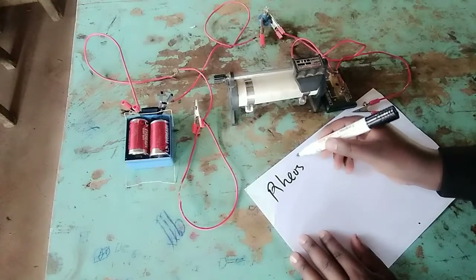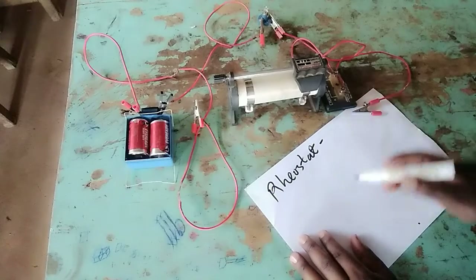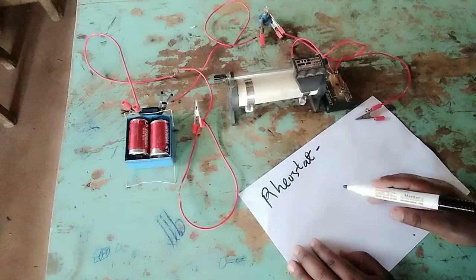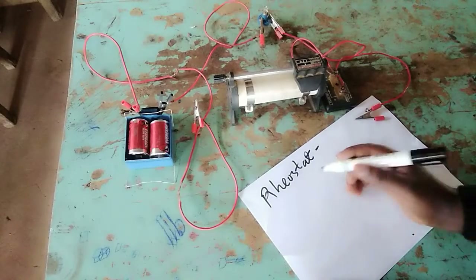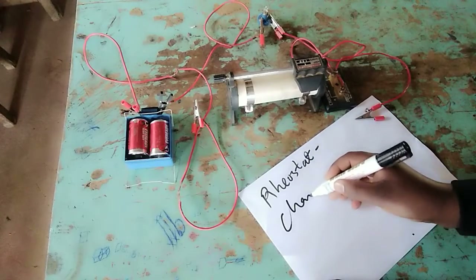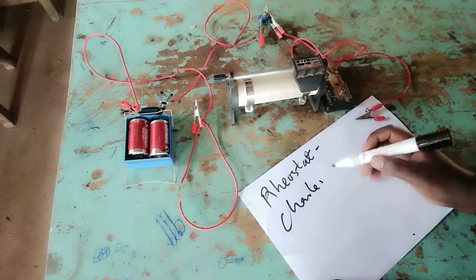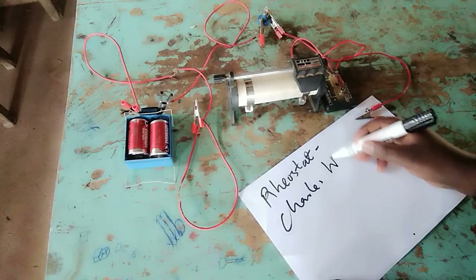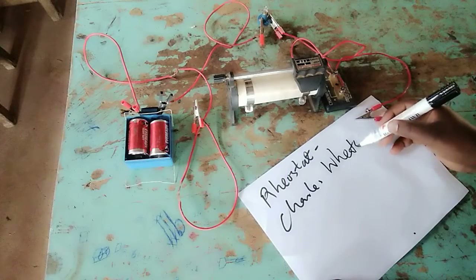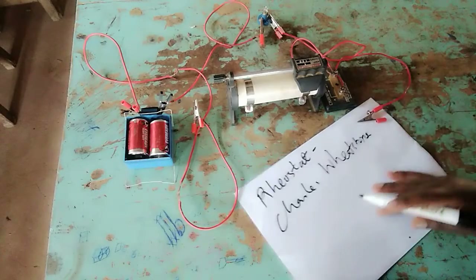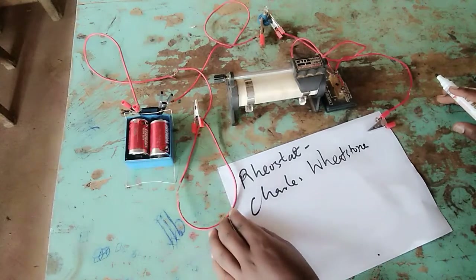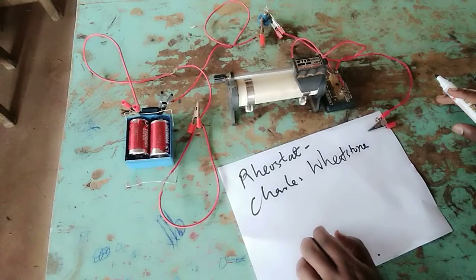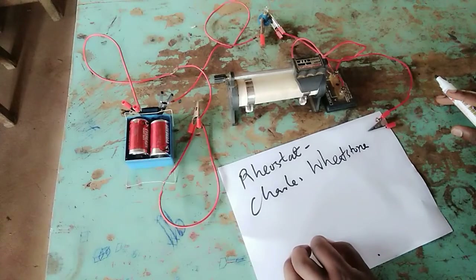A rheostat was discovered by an English scientist called Charles Wheatstone. Charles Wheatstone is the gentleman behind the discovery and the functioning of this resistor called a rheostat, which we are going to see its main parts and how it operates.